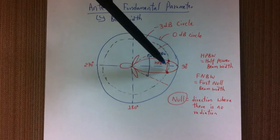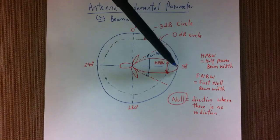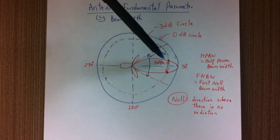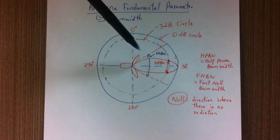The width of this beam is called half power beam width. So if you have this zero dB circle and then this circle is negative 3 dB, then from this point to this point is your half power beam width.